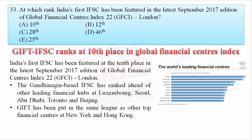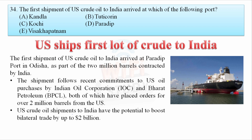India's first IFSC has been featured at the 10th rank in the latest September 2017 edition of the Global Financial Centre Index 22 (GFCI 22) in London. The Gandhinagar-based IFSC ranked ahead of financial hubs like Luxembourg, Seoul, and Beijing. Also, the first shipment of US crude oil to India arrived at Paradip Port in Odisha, as part of a 2 million barrel contract.